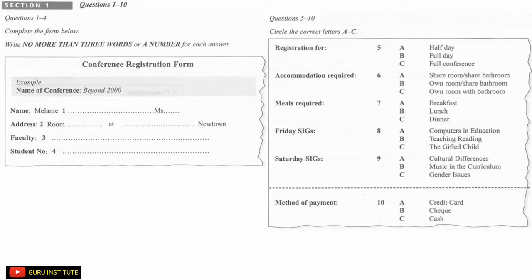Is that M-I-T-C-H-E double L? Yes, that's right. And that's Ms, not Miss. Okay, fair enough. And what's your address Melanie? I live in student accommodation at Sydney University, so my address there is Room 66, Women's College, Newtown.